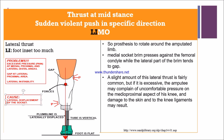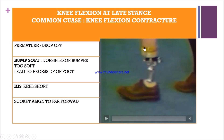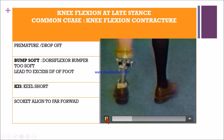Now let's see knee flexion at late stance as a transtibial gait deviation. The most common cause is knee flexion contracture. It can be either premature or delayed knee flexion. Remember: 'bump soft' means the dorsiflexion bumper is too soft, leading to excessive dorsiflexion; 'case' means the keel is too short or the socket is aligned too far forward.